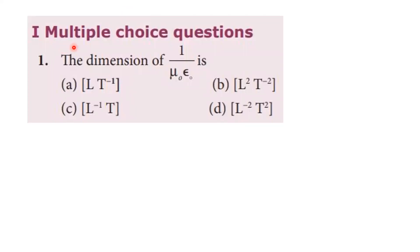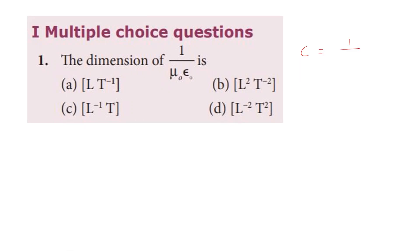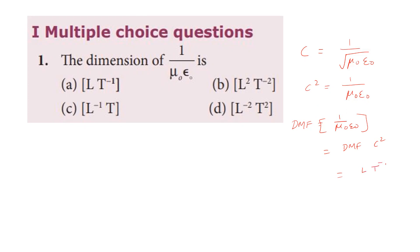Electromagnetic waves, Unit 5 — multiple choice questions. First question: the dimensions of 1 by root of μ₀ε₀. The speed of light in vacuum is equal to 1 by square root of μ₀ε₀, so c squared equals 1 by μ₀ε₀. The dimensional formula of 1 by μ₀ε₀ equals that of c squared, which is L²T⁻². So the second option is the correct answer.